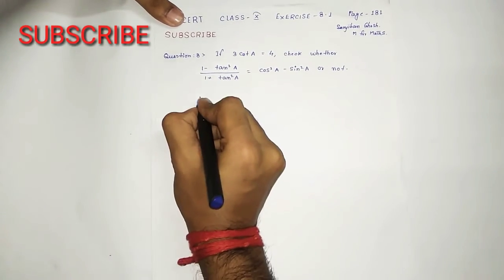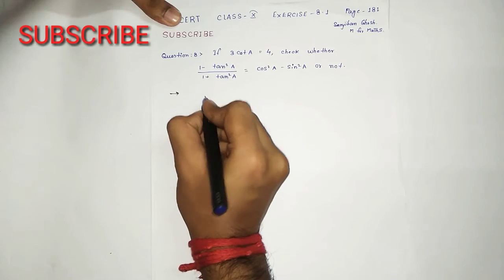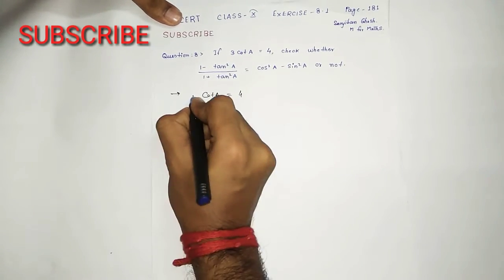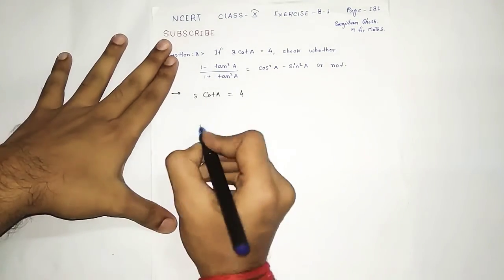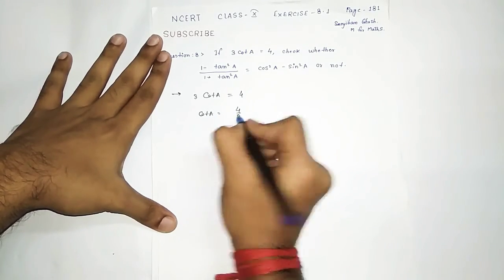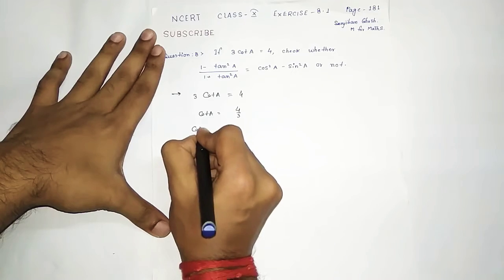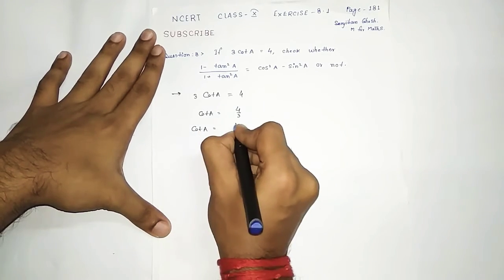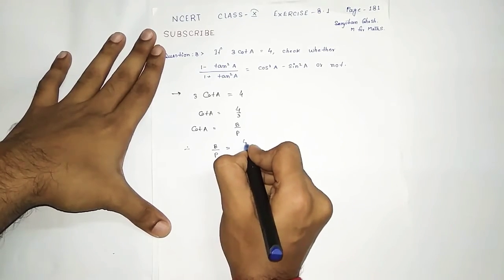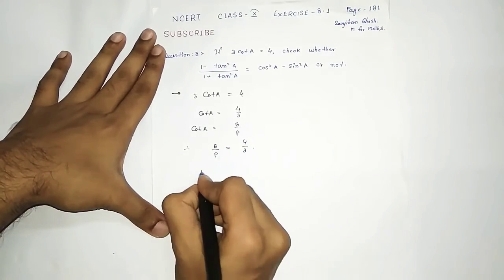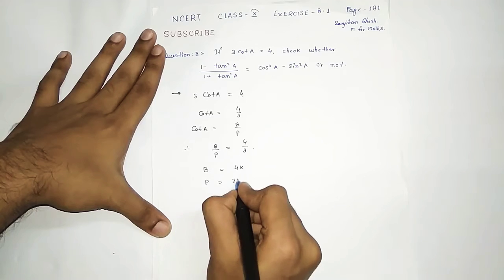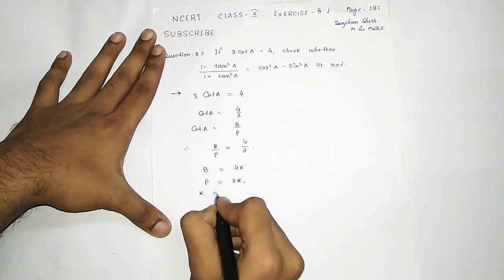So first of all, what is given here? It is given that 3 cot a equals to 4, so you can easily find out the value of cot a. Therefore cot a equals to 4 by 3. And obviously cot a equals to base by perpendicular, so base by perpendicular is 4 by 3. From here you can take base equals to 4k and perpendicular as 3k, where k is a non-zero constant.